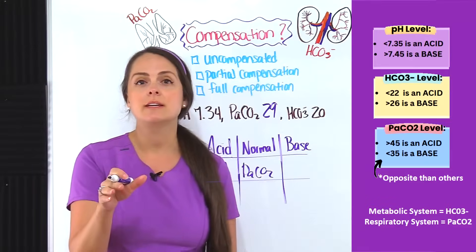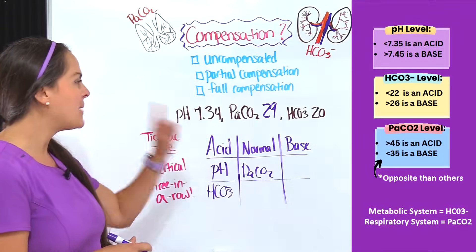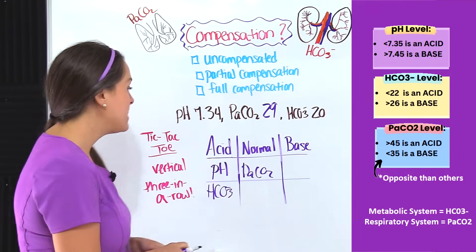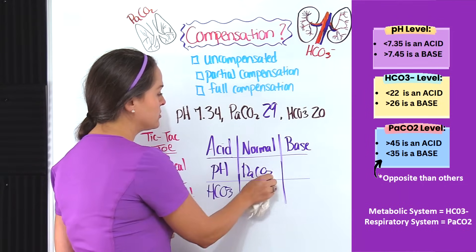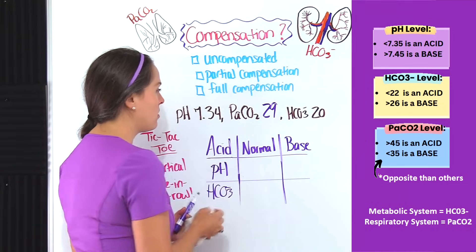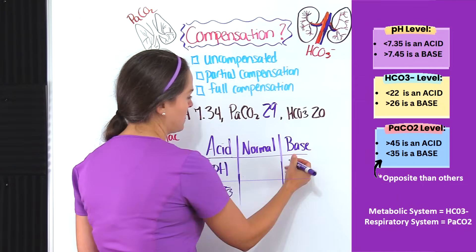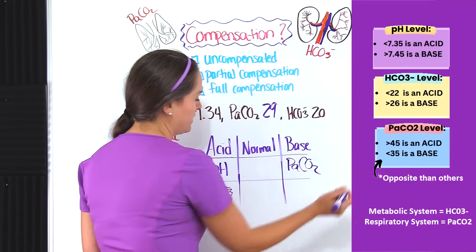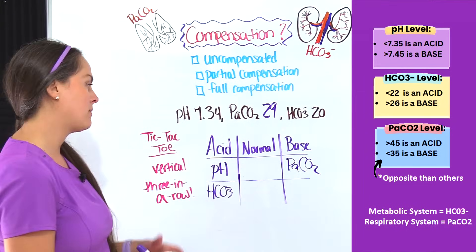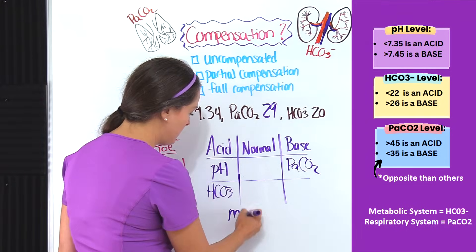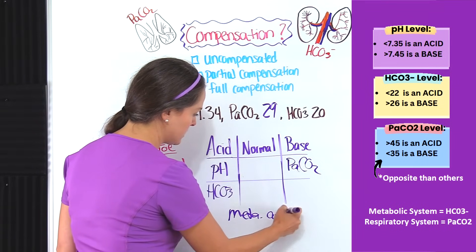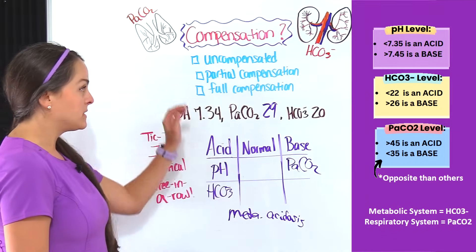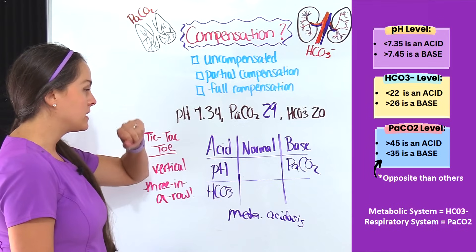Now let's change things up a little bit. I have the same exact problem, but I've changed the PaCO2 to 29. So now this PaCO2 is not normal — it is on the basic side. I still have metabolic acidosis because I have this vertical three in a row, so I know I don't have full compensation.